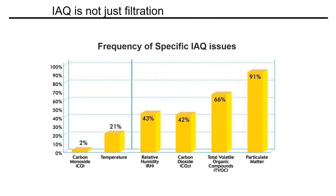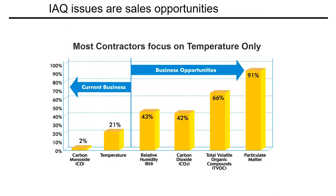Our industry is pretty good at carbon monoxide management and temperature control, but the big opportunities are humidity, VOCs, and particulate matter. We're decent at adding humidity with humidifiers, but as an industry we stink at dehumidification. VOCs and particulate matter — getting rid of tiny things that get stuck in your lungs — are huge targets we can address with filtration and other technologies.